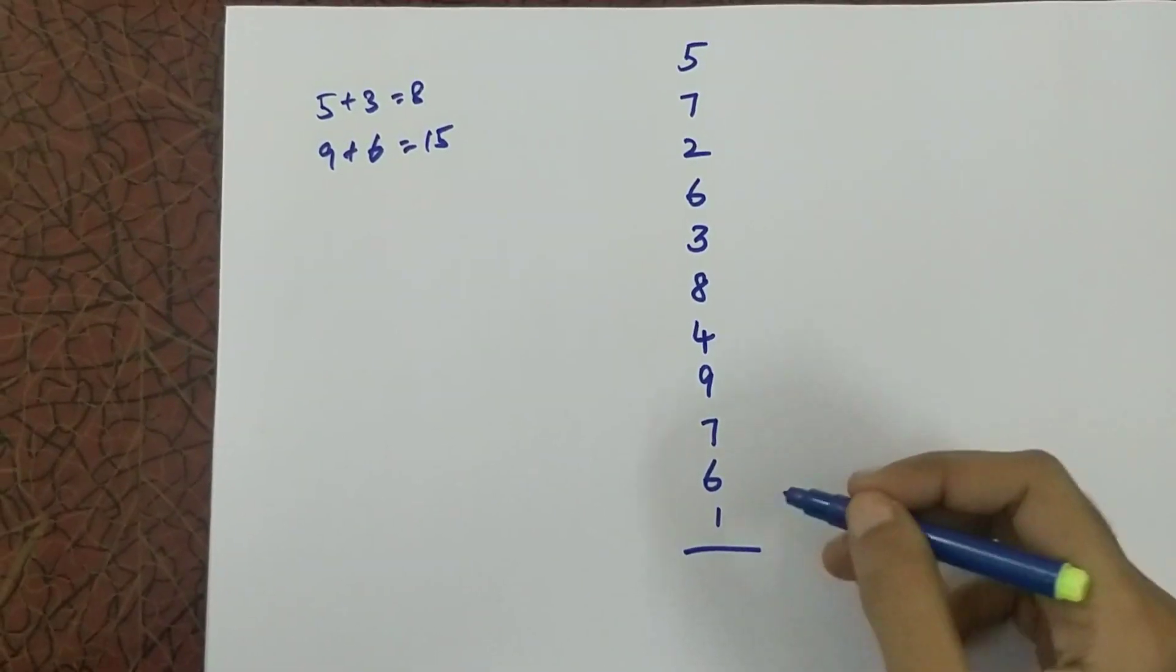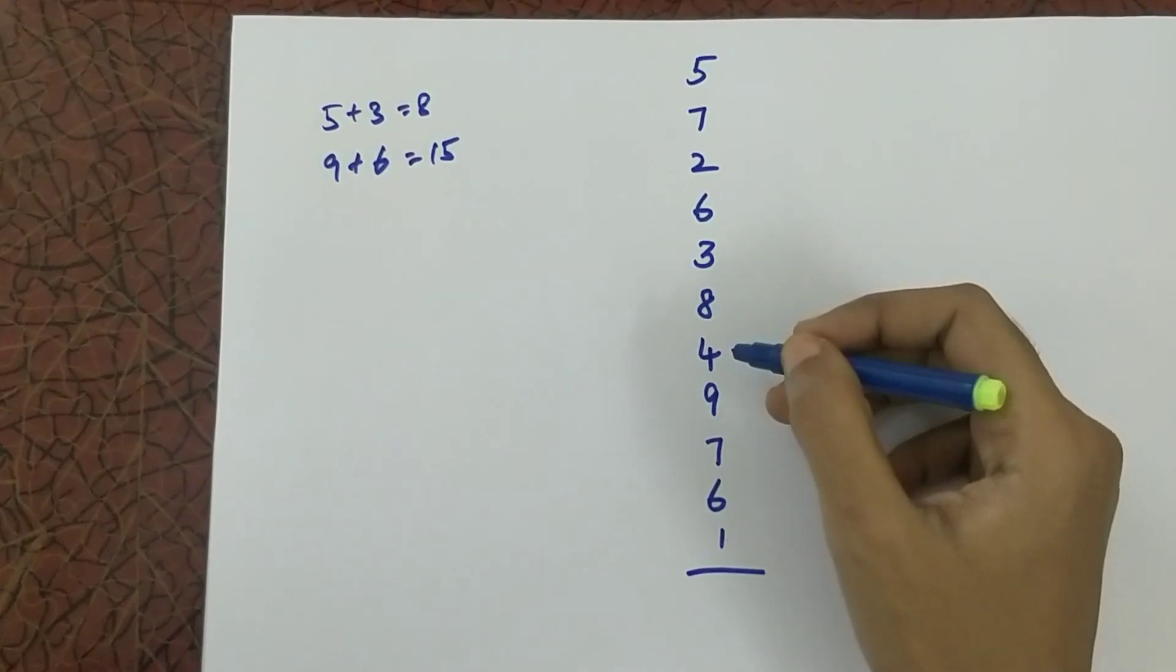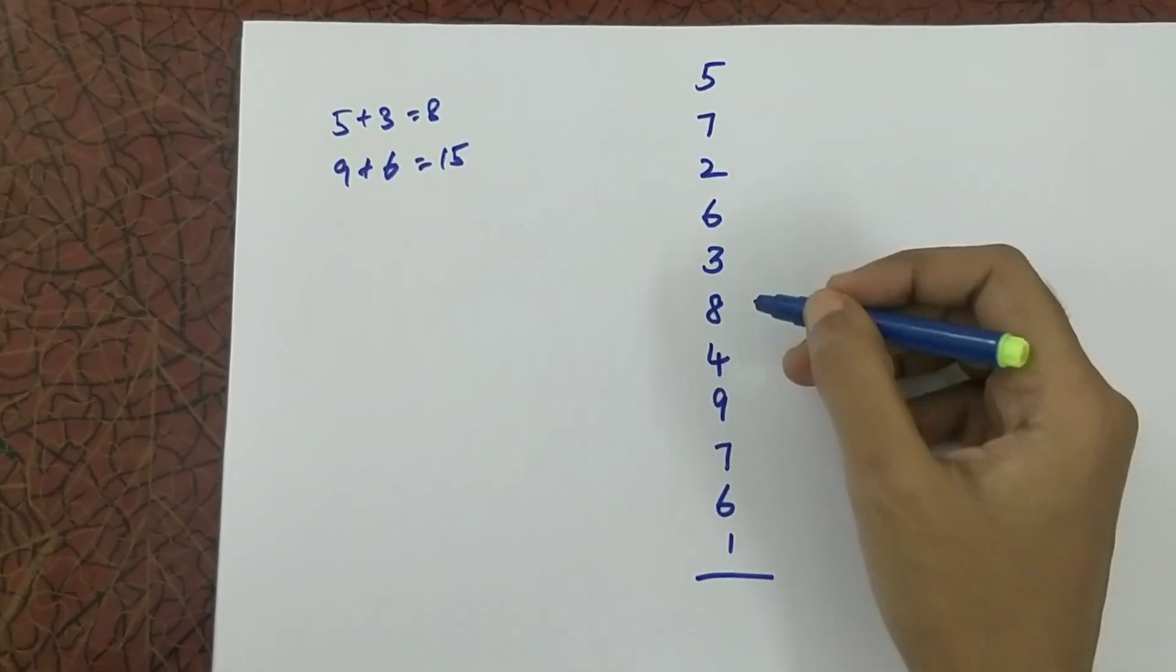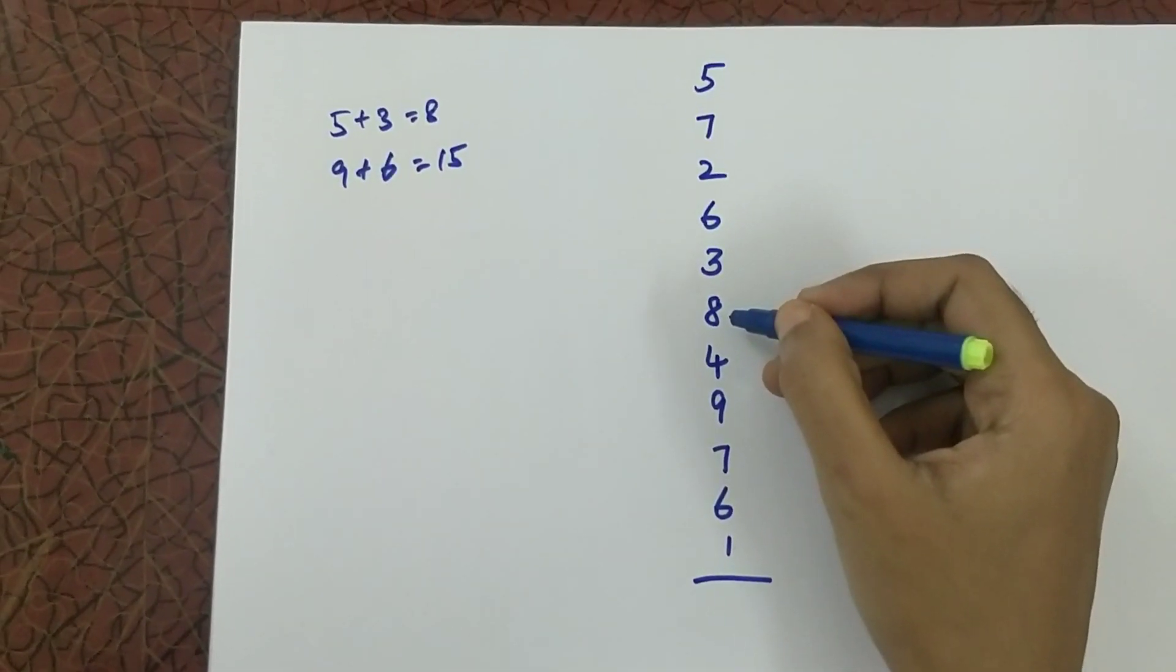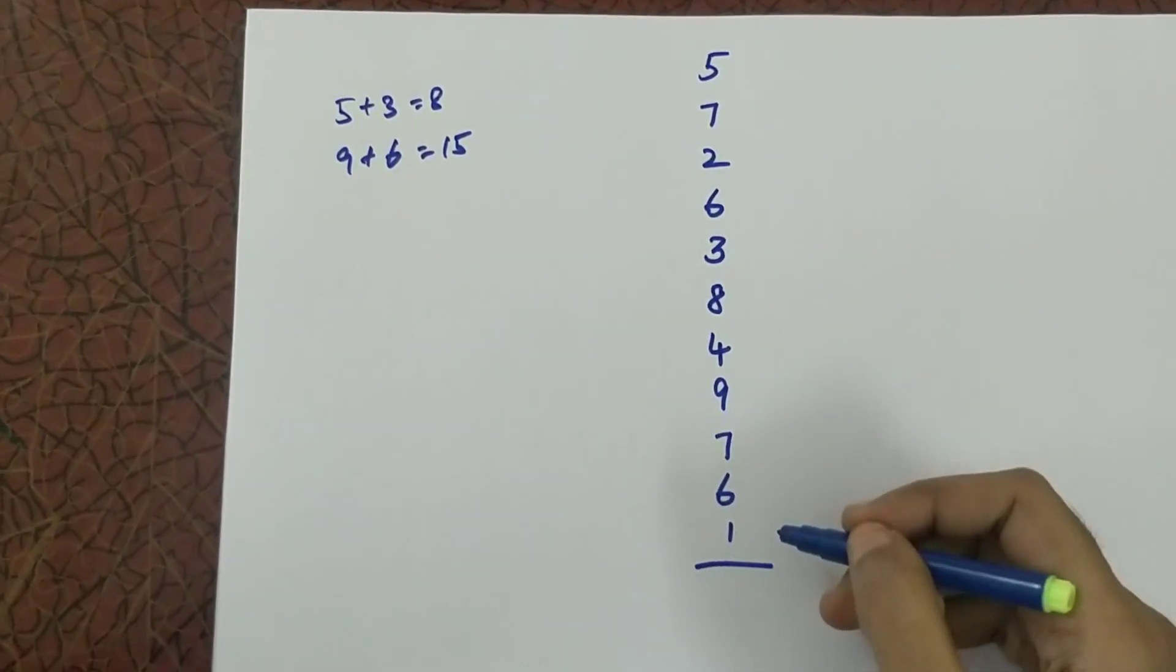If you see the sum 1 plus 6 equals 7, 7 plus 7 equals 14, 14 plus 9 equals 23, 23 plus 4 equals 27, 27 plus 8 - you may stop here and you may take more time to solve this complete sum.